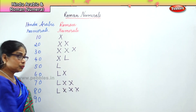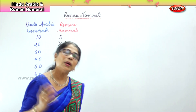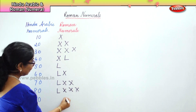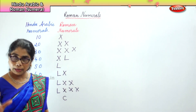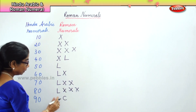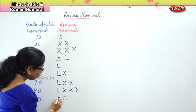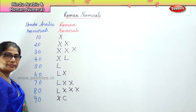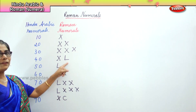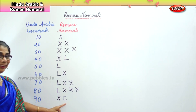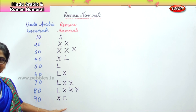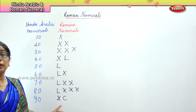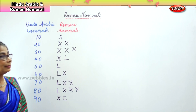Now when it comes to 90, there is a change. What is 100? 100 is C. Now any numeral to the left of the greater numeral is always minus. Same thing here: 50 minus 10 is 40. So 100 minus 10 is 90. Anything to the left of the greater numeral is always minus.